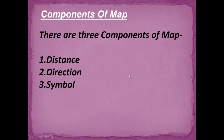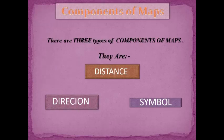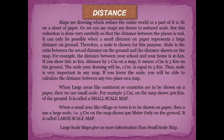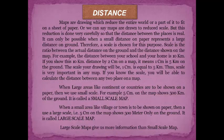Components of a map: There are mainly three components of a map — distance, direction, and symbol. Maps are drawings that reduce the entire world or a part of it to fit on a sheet of paper, so maps are drawn to a reduced scale. This reduction is done very carefully so that the distance between places remains accurate. A small distance on paper represents a large distance on the ground. Therefore, a scale is chosen for this purpose. Scale is the ratio between the actual distance on the ground and the distance shown on the map.